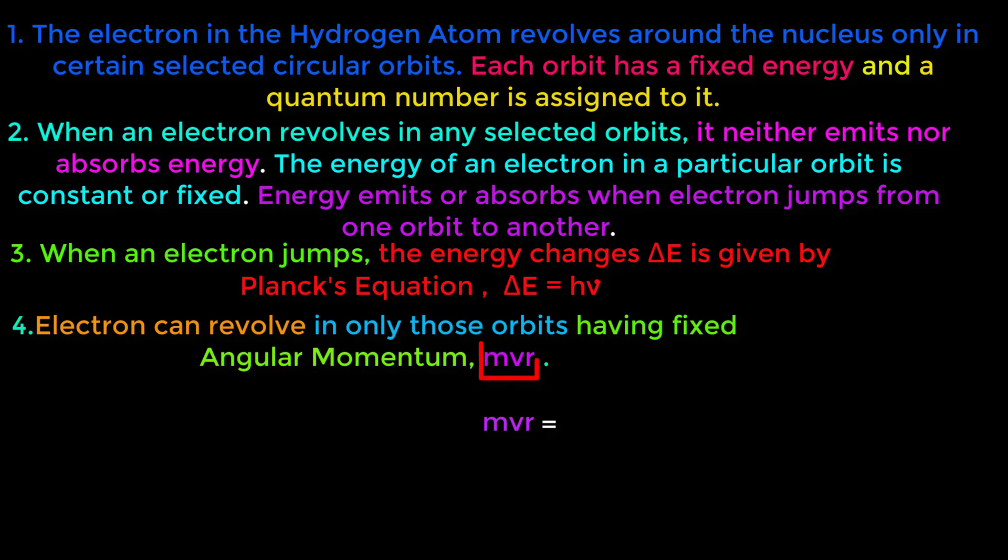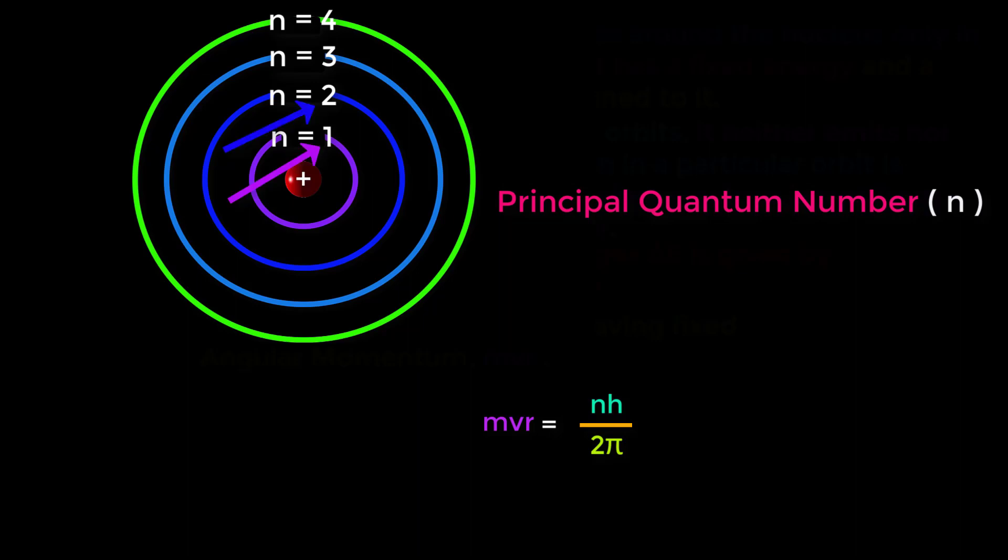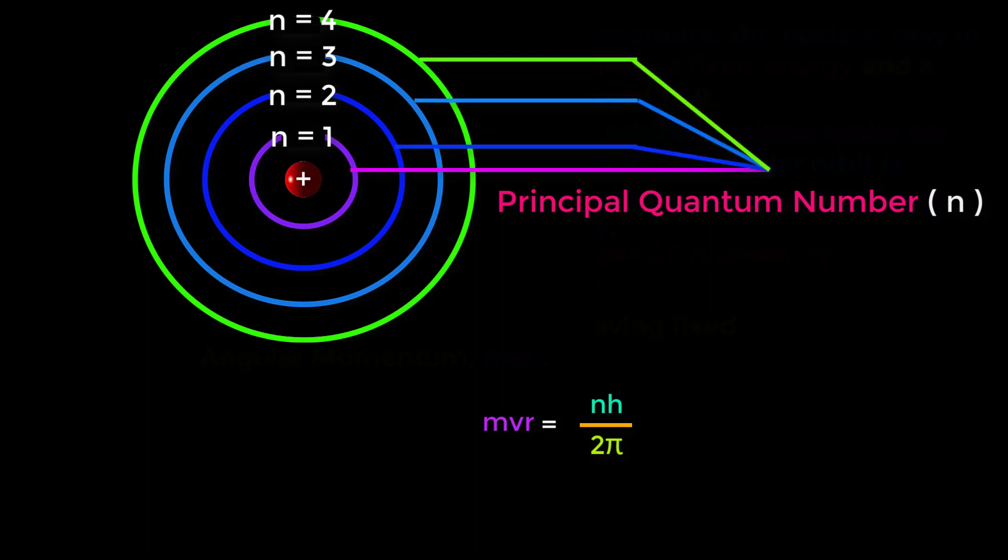The value of MVR is nh over 2π. MVR depends upon this n. What is the n? This n is principal quantum number: 1, 2, 3, 4, up to infinity. For each orbit, quantum number is fixed.